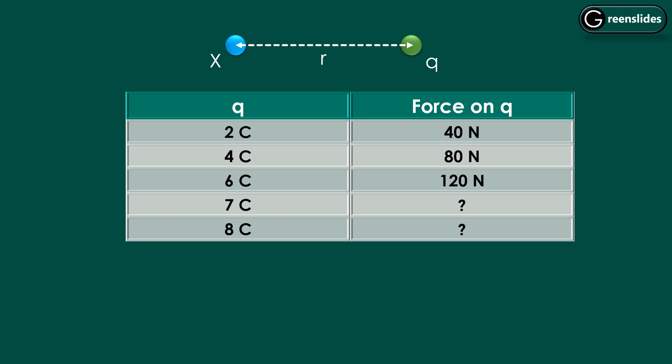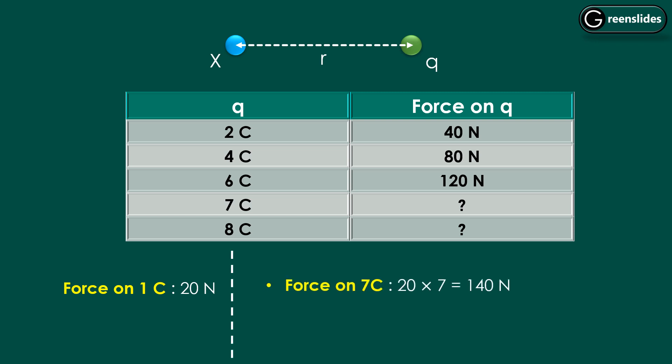Forget about electrostatics — you can solve this using the unitary method. Calculate the force on 1 coulomb of charge, which is 20 N. Once you have the force on 1 coulomb, it is very easy to calculate the force on 7 coulombs, which is 140 N, and similarly on 8 coulombs. And if the question asks for 9, 10, 20, or even 50 coulombs, you can easily find it.